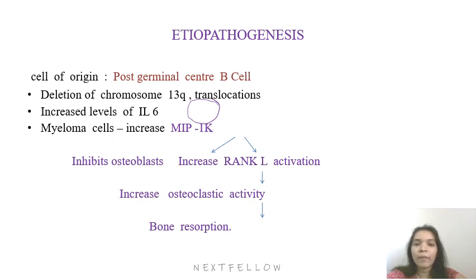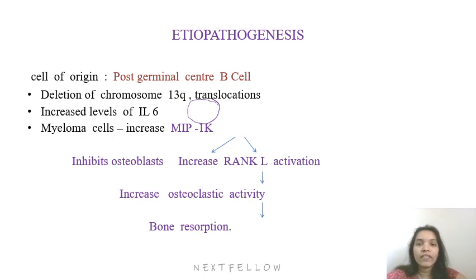These myeloma cells increase MIP1α — macrophage inflammatory protein 1α — which is produced from myeloma cells and inhibits osteoblasts in the bone while increasing RANK-L activation. This RANK-L activation results in increased osteoclastic activity and bone resorption, which is why patients present with multiple lytic lesions of the bone.